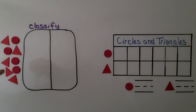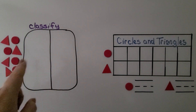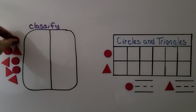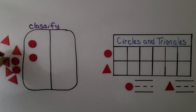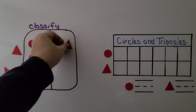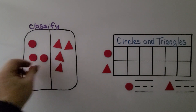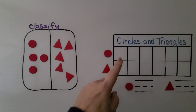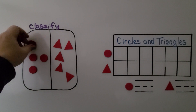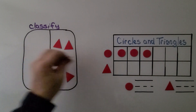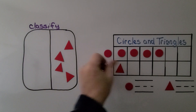Here we have several shapes, and we can sort and classify them into two categories. They're all the same color — they're all red. So we can classify them by shape. We can put the circles on one side and the triangles on the other side. We have classified them into two categories: circle and triangle. And we can put the circles into our graph for the circle row, and the triangles into the graph in our triangle row.